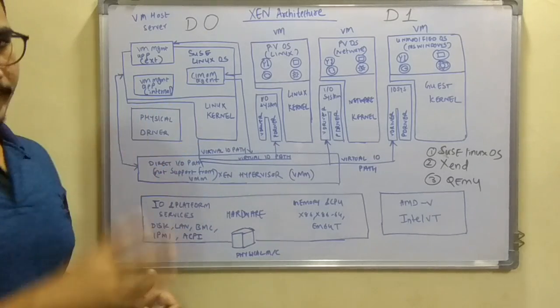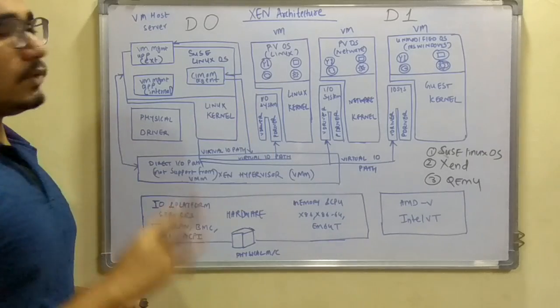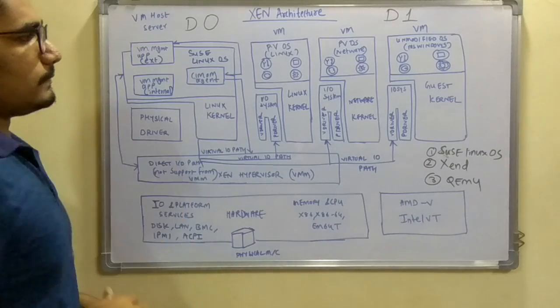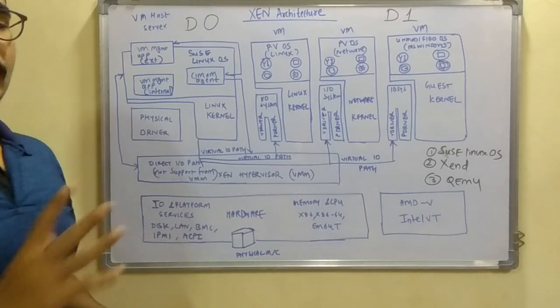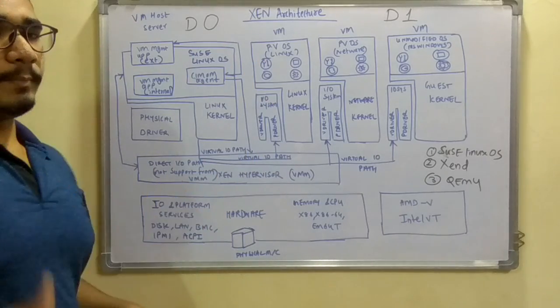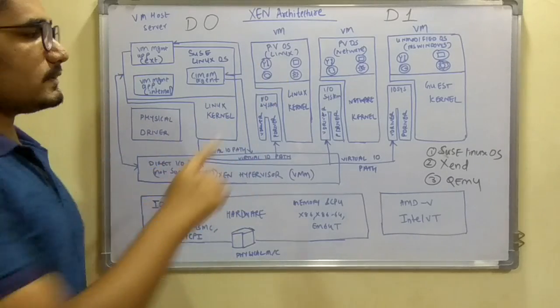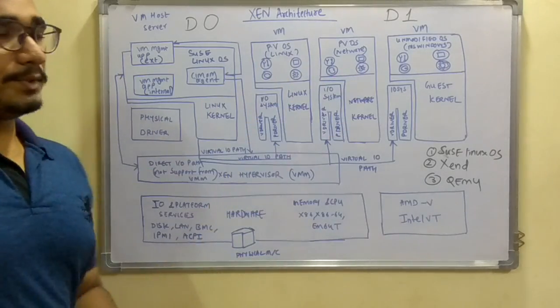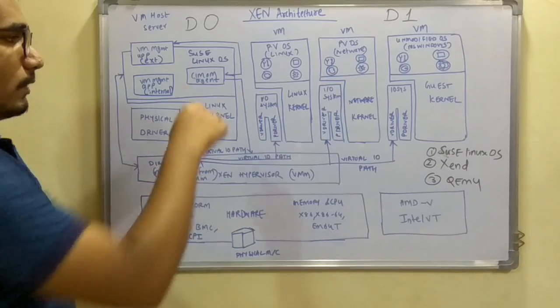We will not go into the detail of SIMON agent. Then we have physical drivers and Linux kernel and many kinds of things. This was Domain 0. Next, alongside you have Domain 1 and you can see two different kinds of operating systems running on it. First is PV, that is para-virtualized OS. This is based on Linux and this is based on network.